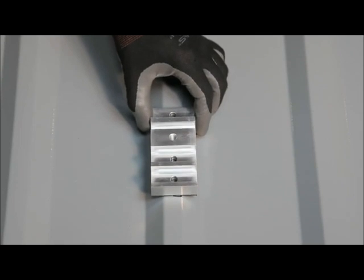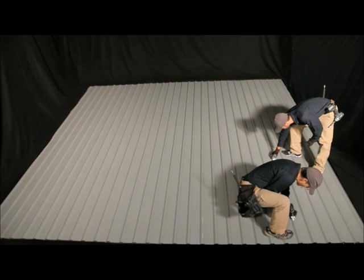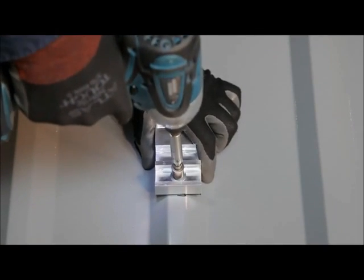To install a trap mount, align it to the layout mark and drive self-tapping sheet metal screws with integrated sealing washers into each of the three holes, taking care not to over-tension the screws.